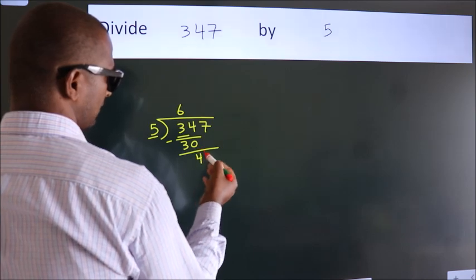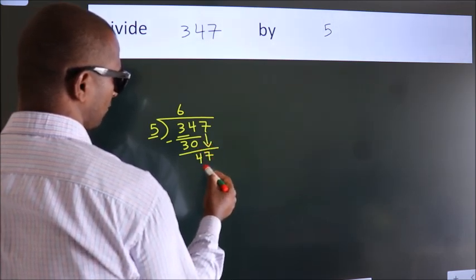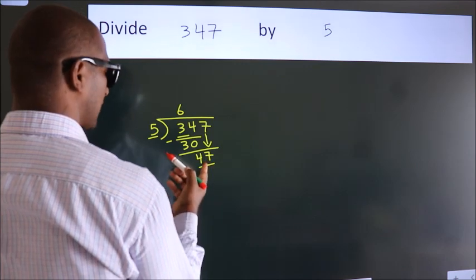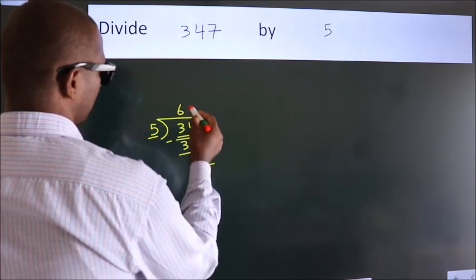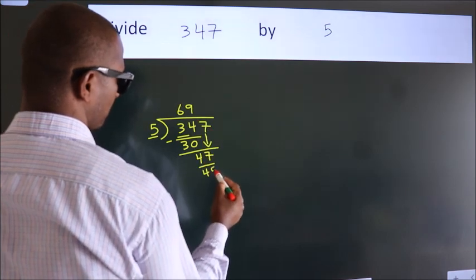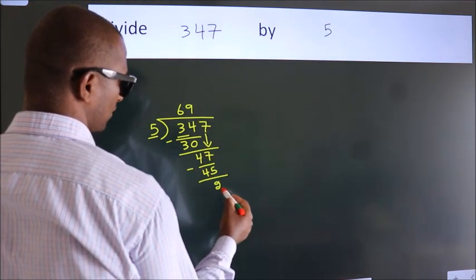After this, bring down the beside number, so 7 down. So 47. A number close to 47 in the 5 table is 5 times 9 equals 45. Now we subtract. We get 2.